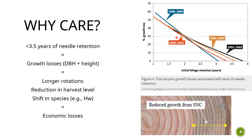Why care? A tree's crown is basically its engine. When you start getting three and a half years or fewer of needle retention, there are growth losses. You can see that clearly in this graph — there are reductions in both diameter and height. This can lead to longer rotation ages, reductions in harvest levels, and shifts in species. For example, maybe the natural hemlock can outcompete the planted Douglas fir if it's been impacted by Swiss needle cast. All of these impacts can lead to economic losses.